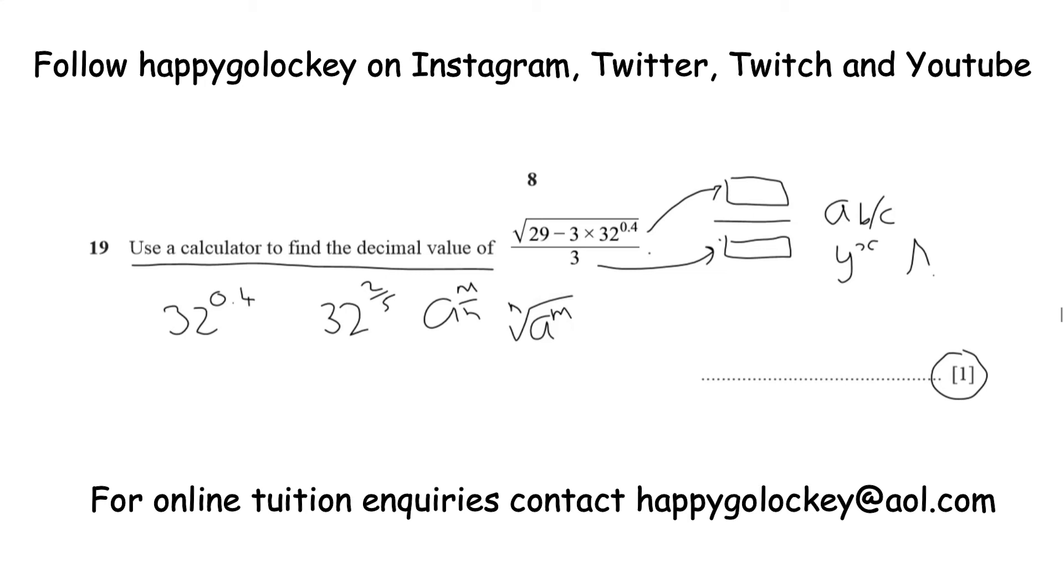So what we really want here is the 5th root of 32, which is 2, because 2 to the power of 5 is 32, and then square it. That would be 4. So we can go straight onto the next piece, which is the square root of 29, take away 3 multiplied by what we just said, 4, and all that needs to be over 3.